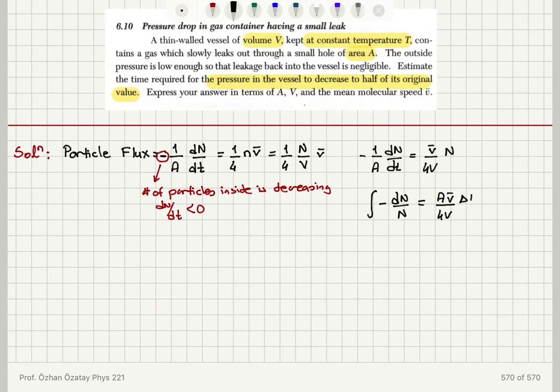Now I'm going to integrate this from T initial to T final. The initial configuration, I have capital N-zero molecules inside, and finally the pressure in the vessel will decrease so that the number of particles will decrease to half of its value.